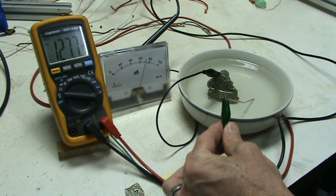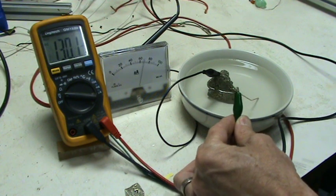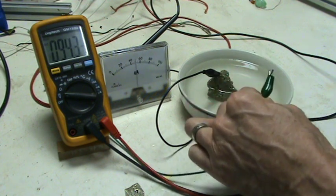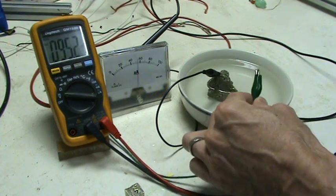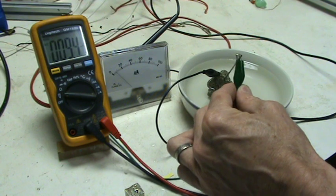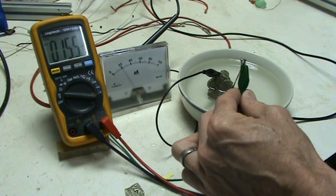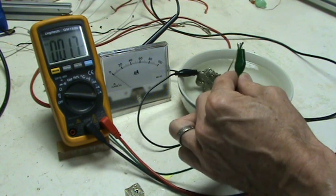See that meter going up? 70, 80 microamps, 140 millivolts. And again, depending where in the bowl I've got the welding rod, depends on how much. If I touch the rock with the rod, I get a little bit.